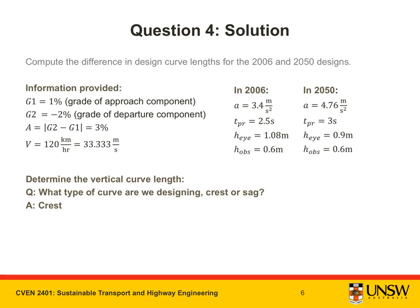Here's an interim question. What type of curve are we designing? A crest or a sag curve? If you look at the information given, G1 is 1%. That is a positive slope. G2 is negative 2%. That's a negative slope. Therefore, we're designing a crest curve.